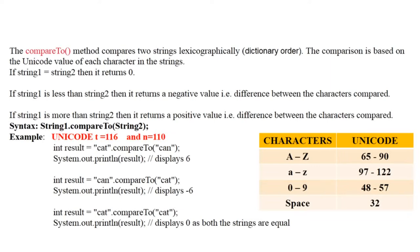If string one and string two are the same, it will return zero. There are three possibilities: it will return zero, a positive number, or a negative number. When both strings are equal, the function returns zero. If string one is less than string two, it will return a negative value.